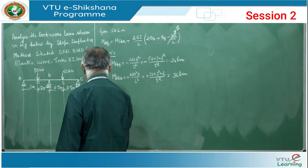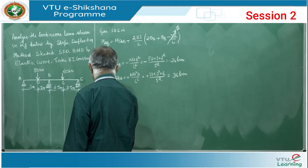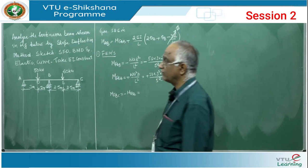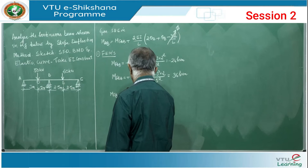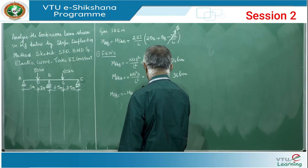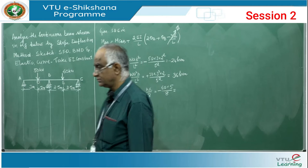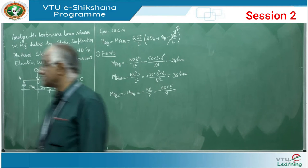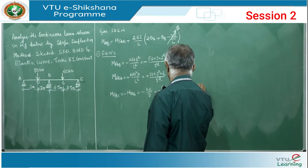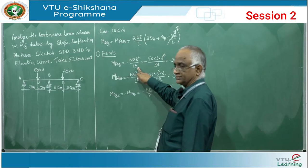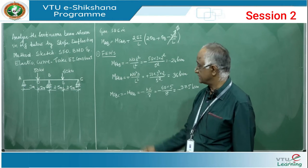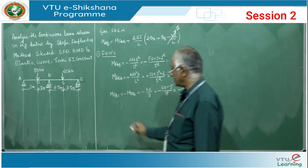For span BC with a 60 kN load at mid-span (L=5m): M_FBC equals minus WL/8 equals minus 60×5/8 equals minus 37.5 kN·m, and M_FCB equals plus 37.5 kN·m. These are the fixed-end moments for both spans.